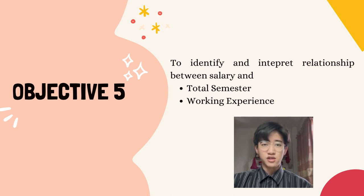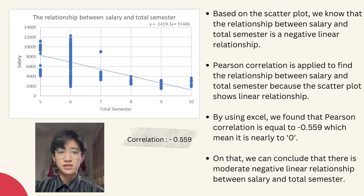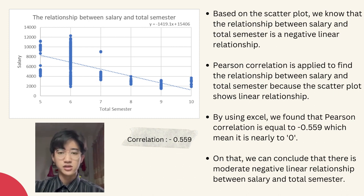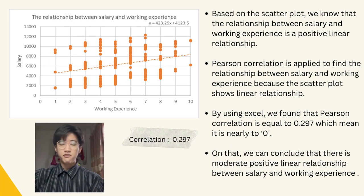Lastly, I will continue the presentation with Objective 5. In Objective 5, we will identify and interpret the relationship between salary and total semester, and also between salary and working experience. Based on the scatter plot, the relationship between salary and total semester is a negative linear relationship. Pearson correlation is applied, and using Excel, we found the Pearson correlation is negative 0.559, which is nearly 0. We can conclude there is a moderate negative linear relationship between salary and total semester. Based on the scatter plot for salary and working experience, the relationship is a positive linear relationship. The Pearson correlation is 0.297, which is nearly 0, so we conclude there is a moderate positive linear relationship between salary and working experience.